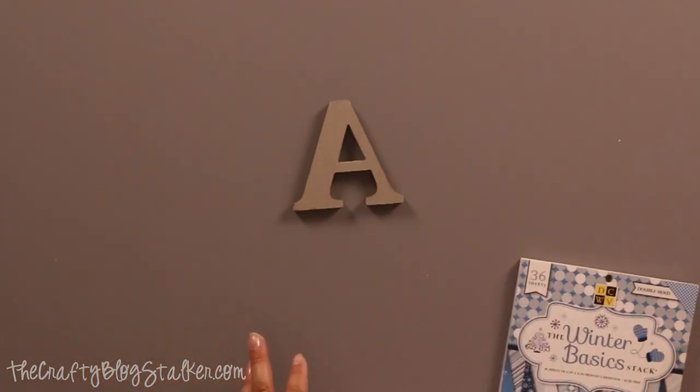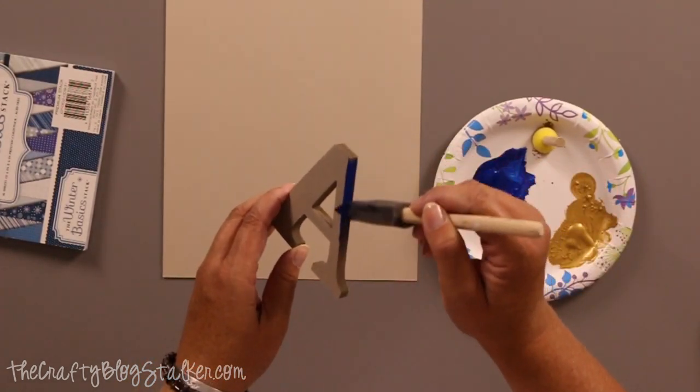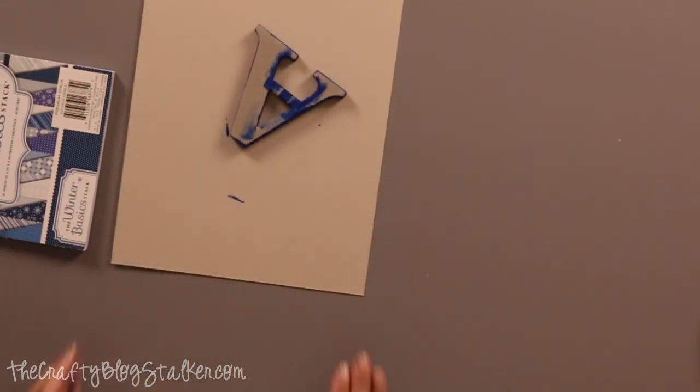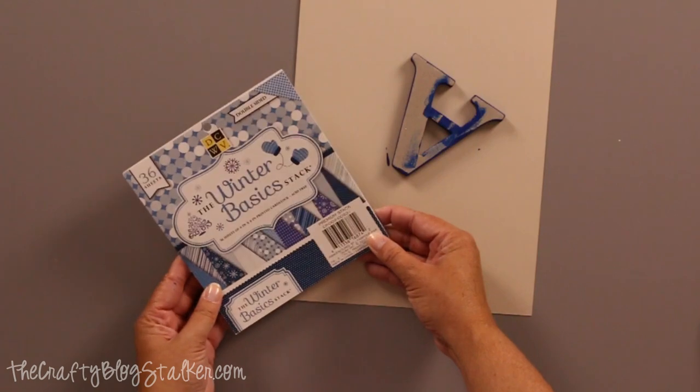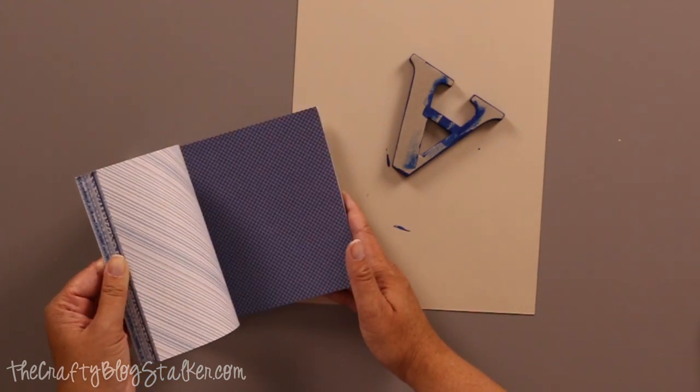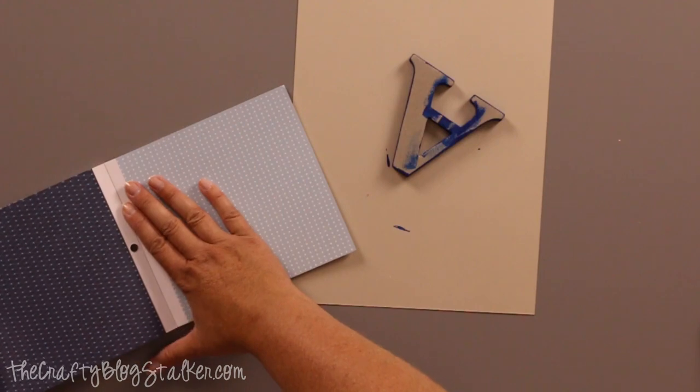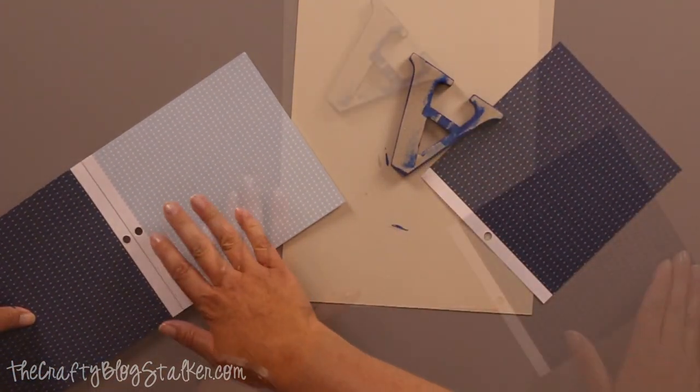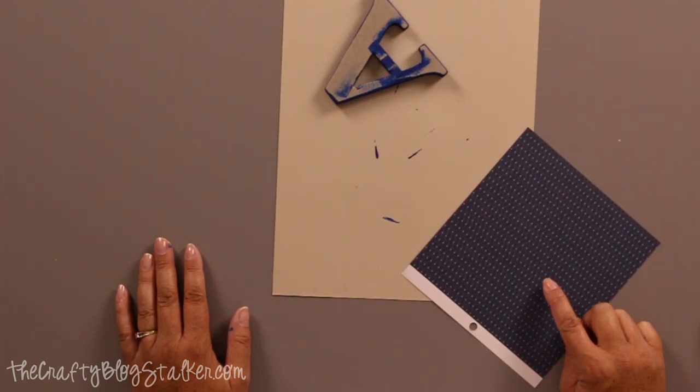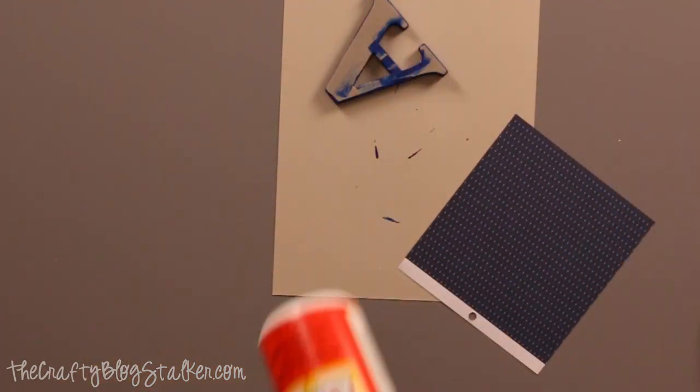For my next A, we're going to just do a little paper mache. I'm just going to paint the edges blue. If it goes over the edge, that's okay because we're going to cover it. What we're going to do is go through this winter stacks paper stack and find a blue that we want. I kind of like that one. We're going to trace that A onto this piece of paper and then I'm going to cut it out and just stick it on there with some Mod Podge.